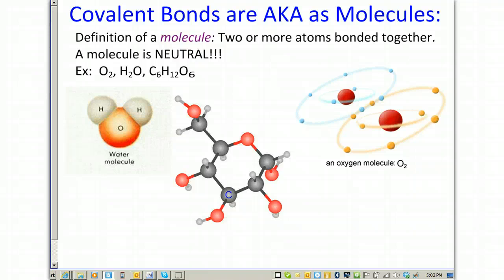Covalent bonds are also known as molecules. By definition of a molecule, it's two or more atoms bonded together. A molecule is always neutral. So some examples are O2, which is over here on the right-hand side, H2O, which is just below. It's very classic water, the molecule, because it looks an awful lot like Mickey Mouse due to its structure. And finally, we have glucose, which is the larger molecule in the center. Glucose is made up of six carbons, which are the gray, the six oxygens, which are red, and 12 hydrogens, which are the little bitty light gray.